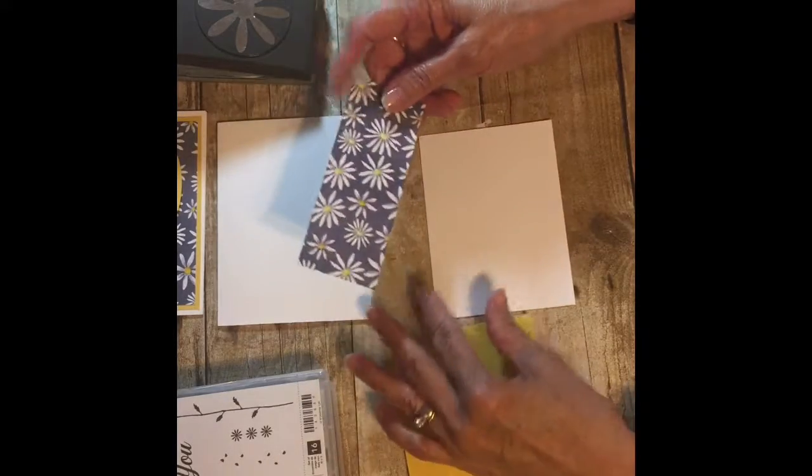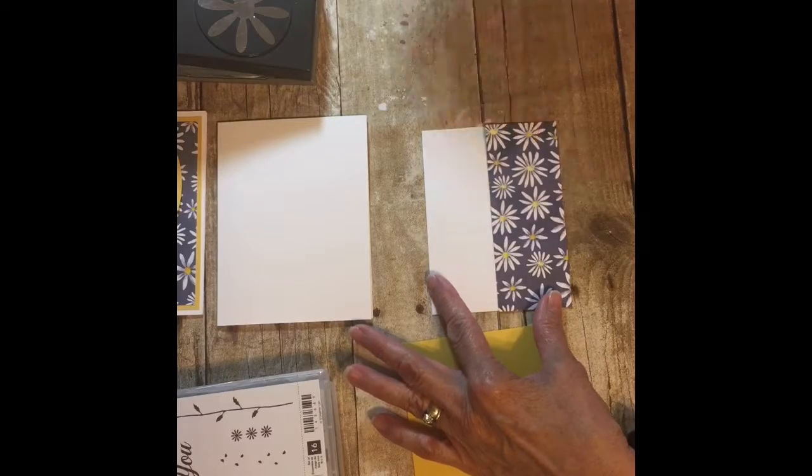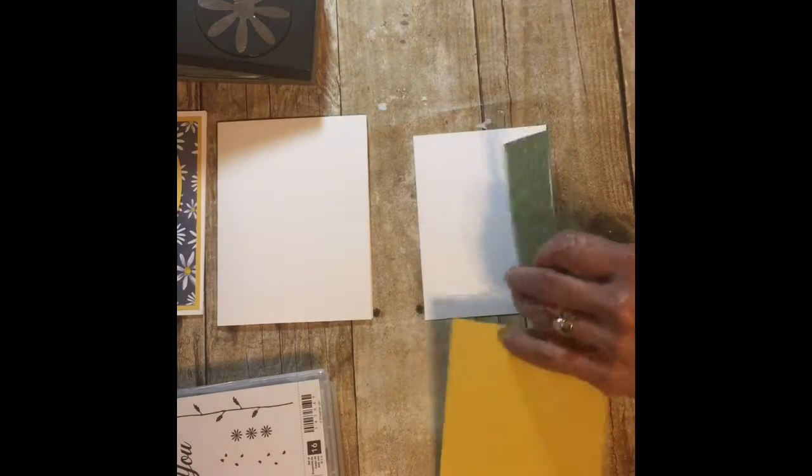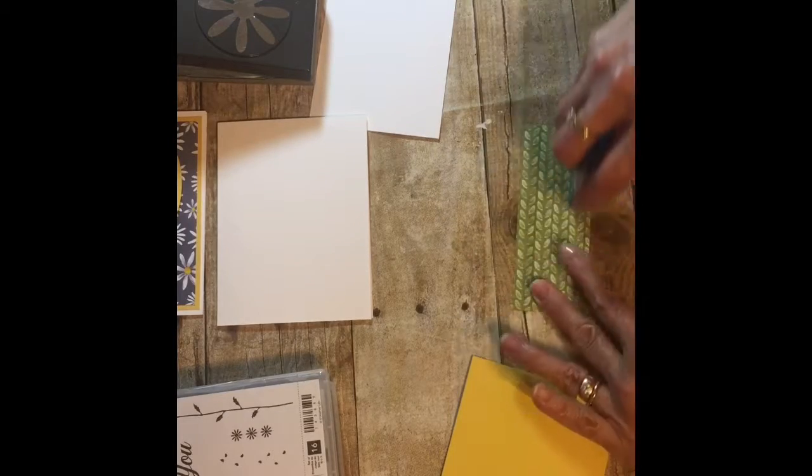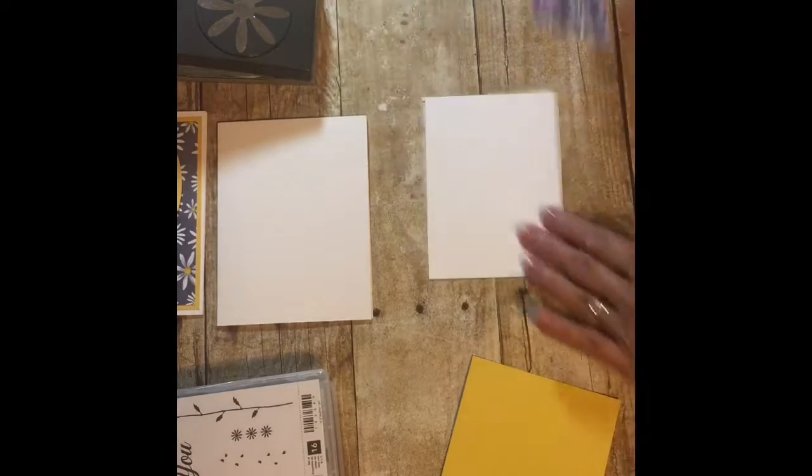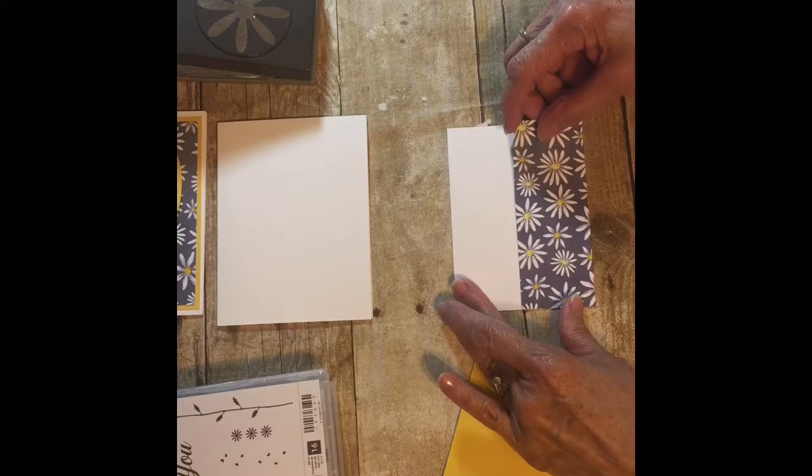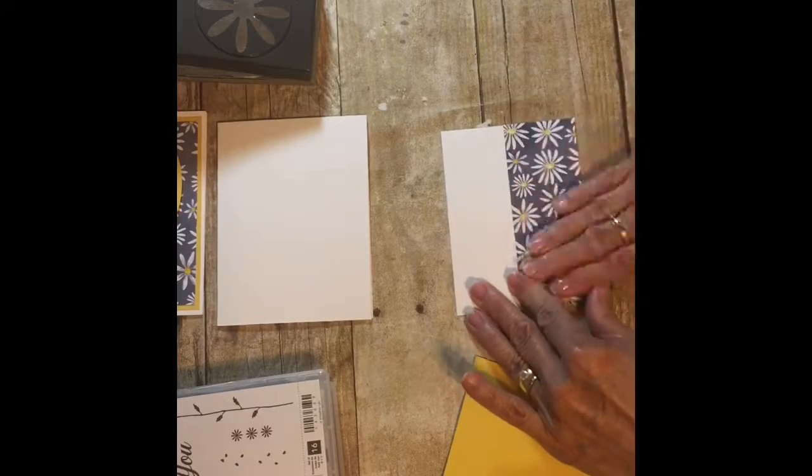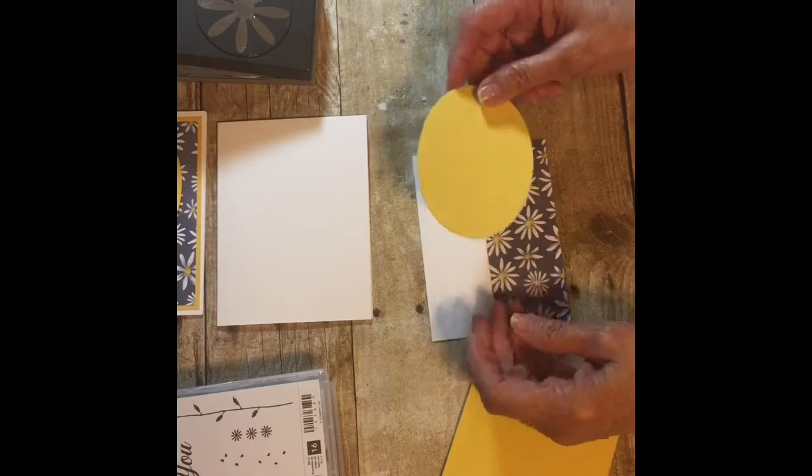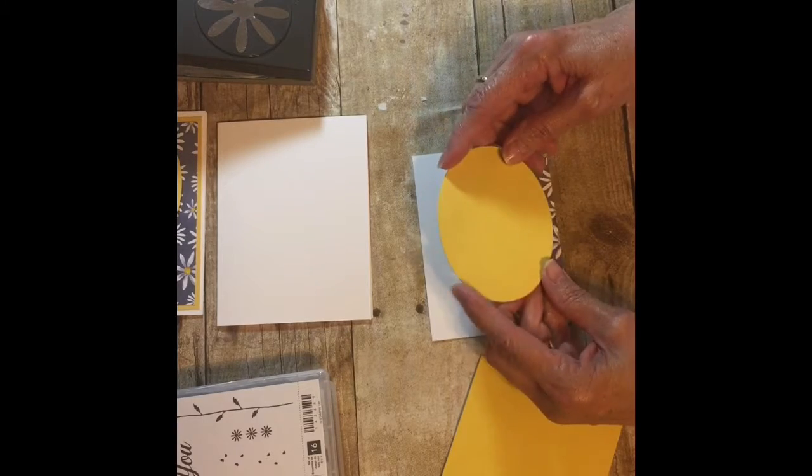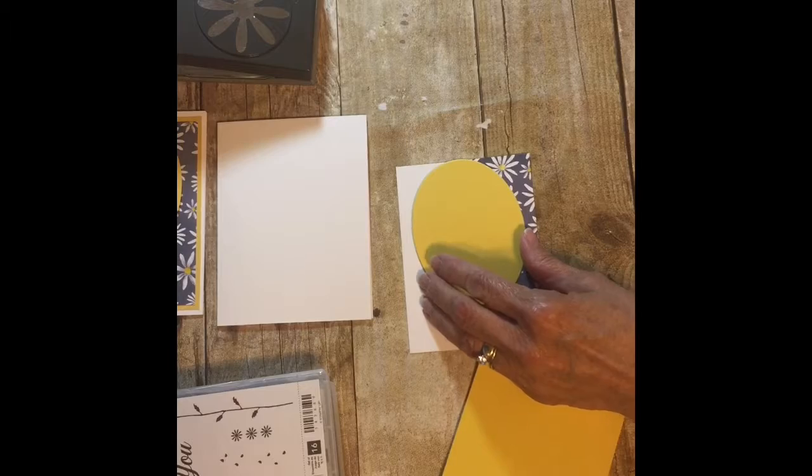I also have a piece of the beautiful daisy designer paper that I've used in this whole set, and this one is cut at five inches by two. I'm going to use my Tombow and put this right down on the bottom of this layer like that. Then this is a piece of the Daffodil Delight and this was one of the large oval framelits.